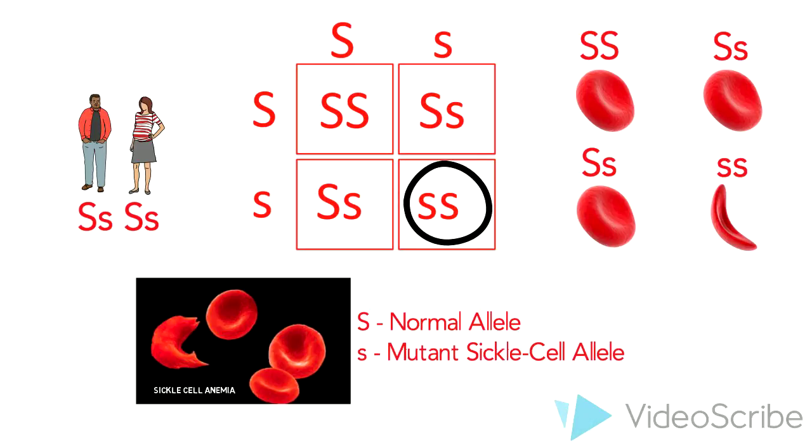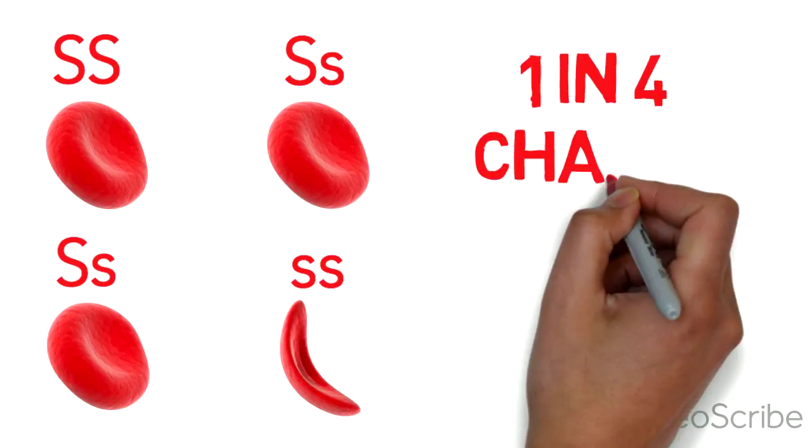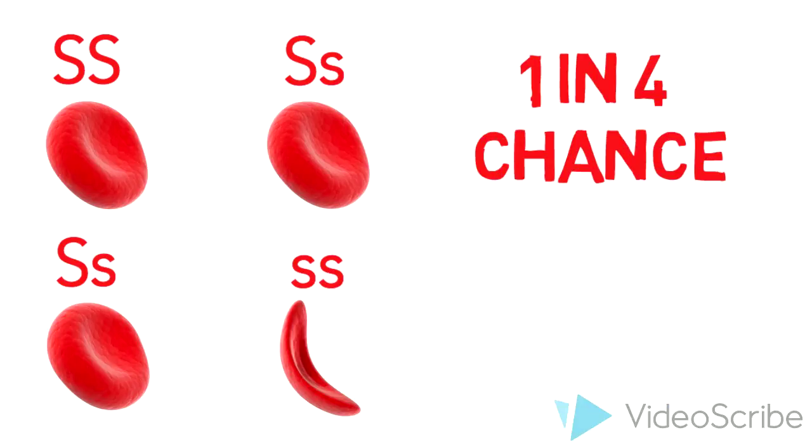As a result, this couple, heterozygous for the disease trait, have a 1 in 4 risk of having a child that is sickle cell anemic.